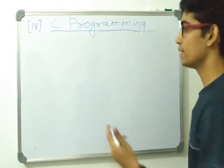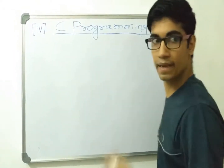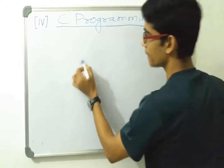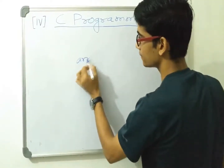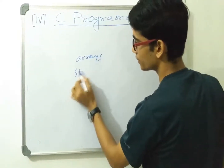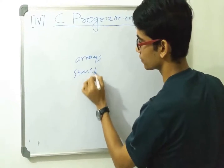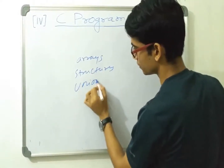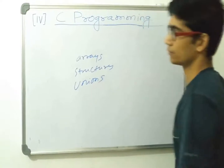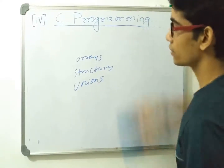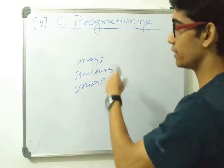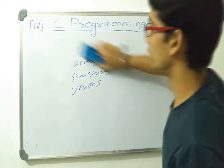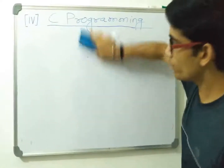We will learn derived data types in later video sections. Derived data types include things like arrays, structures, and unions. That was all about data types for now.